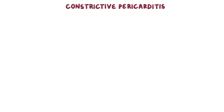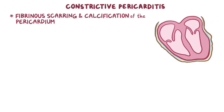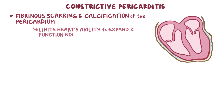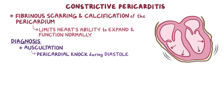There's constrictive pericarditis, which is a chronic process that results in fibrinous scarring and calcification of the pericardium. The pericardium becomes a rigid box that forms a non-compliant shell around the heart, limiting the heart's ability to expand and function normally. So when blood enters the heart, the walls of the heart relax back into this rigid box, creating the so-called pericardial knock during diastole on auscultation, which is due to the sudden termination of ventricular inflow by the encasing pericardium.